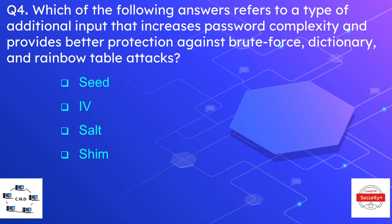Question number four: which of the following refers to a type of additional input that increases password complexity and provides better protection against brute force, dictionary, and rainbow table attacks? The options are speed, IV, salt, or shim. The correct option is salt — a pseudo-random number added to a password to make it more complex against different types of password cracking attacks.